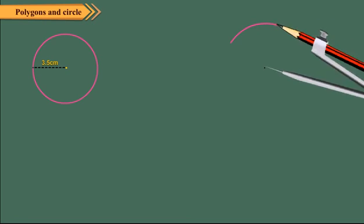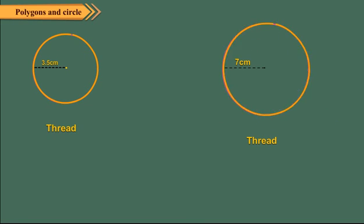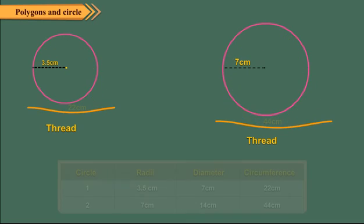Using a compass, draw two circles of radii 3.5 cm and 7 cm, and using a thread, measure the circumference of each circle. Now complete the given table. We see that in each case, the circumference is approximately three times its diameter, or the circumference of a circle is approximately equal to three multiplied by its diameter. You can verify this relationship by drawing some more circles.